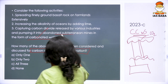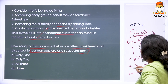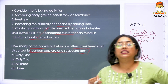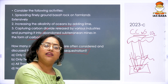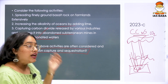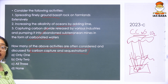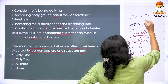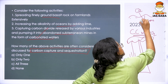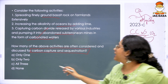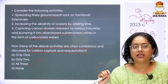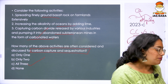Increasing the alkalinity of oceans by adding lime: when lime is added to oceans, excess carbon dioxide reacts with it, forming carbonate particles that get trapped in the water — so excess CO₂ gets captured from the atmosphere. Spreading finely ground basalt on farmlands: basalt is an igneous rock, and CO₂ reacts with basalt to form compounds captured in the soil. All three activities aid in carbon capture and sequestration.